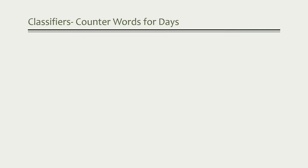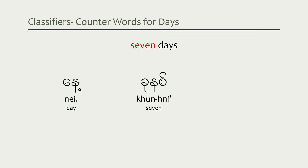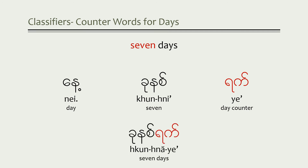There's one other counter word that's pretty important to learn early on. The next counter word is used for days. So let's see how you would say seven days. The word for day is 'ne', the word for seven is 'kuni', and the counter word for days is 'yet'. As with the counter word for people, this counter word only applies to days, so you can drop the root noun. That makes seven days: 'kuni yet'.